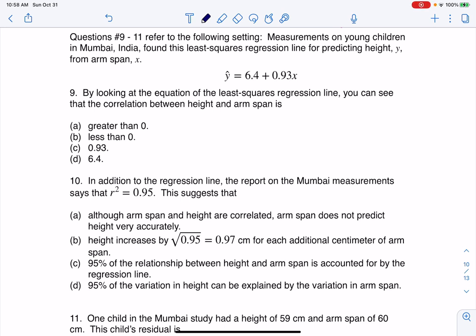Hey everyone, I'm going to do questions 9 through 11 in one screencast since it's all the same setup. We have measurements on young children in Mumbai, India found this least squares regression line for predicting height from arm span. So I do have two numerical variables, regression analysis.